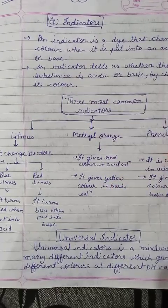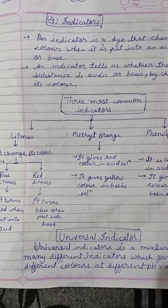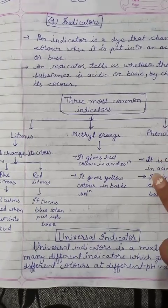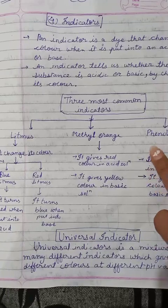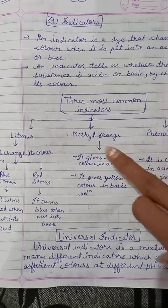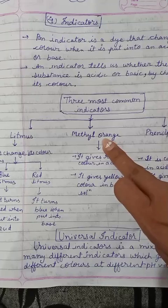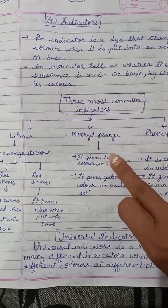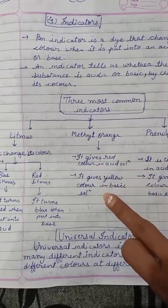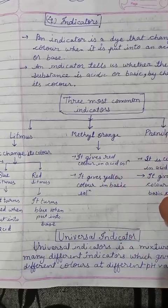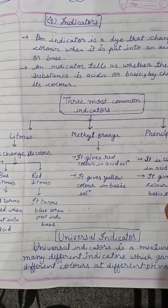The third most common indicator is phenolphthalein. It is colorless in acidic solution. Methyl orange is orange in color, but when we add it in acid it becomes red, then yellow. But phenolphthalein is colorless — this indicator is colorless.